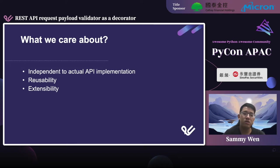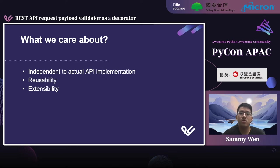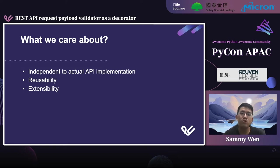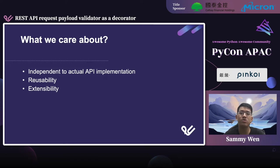We also need to make sure the validator we're creating is reusable and extensible, as the API inputs in a service are usually similar. And there is no way to predict how far your service will grow, which is highly depending on the business side. To achieve the first point, it is intuitive to start thinking about building a middleware — a middleware which can do request payload validation every time before an API call. If you're building a lightweight web service such as using Flask, I think decorator is a great choice.